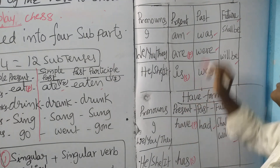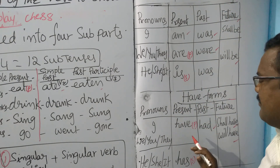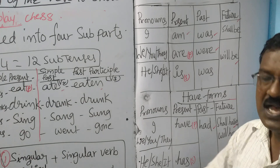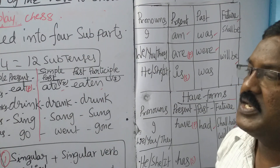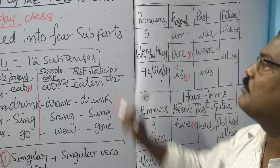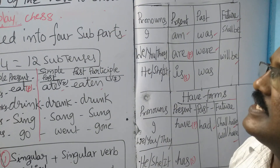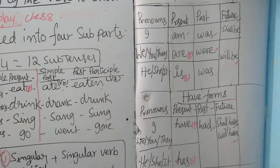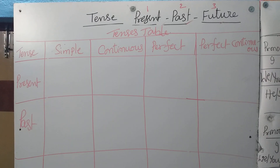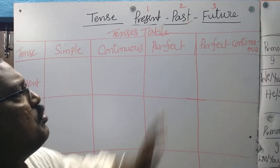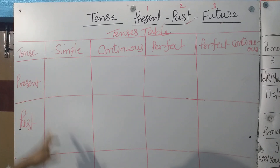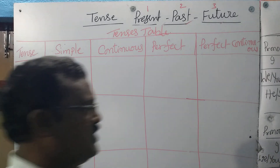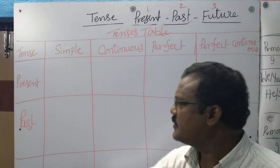If you want to write the four sub-tenses of three main tenses, we have to get help from B forms and have forms. That's why, my dear students, first of all we should have commanding power on B forms and have forms. We are going to write all sub-tenses of three main tenses — present, past, future.